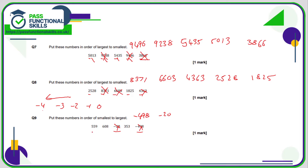Now comparing the remaining three-digit positive numbers: they all begin with 3, 6, and 5. 3 is the lowest, so 353 comes first, followed by 559, then 608.